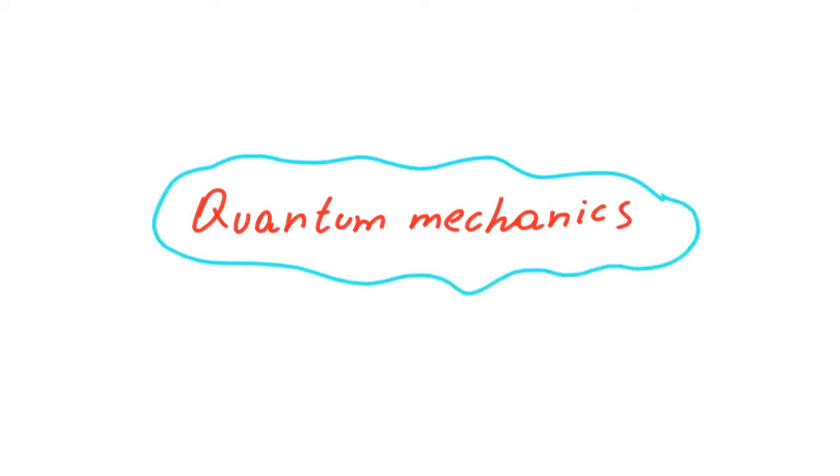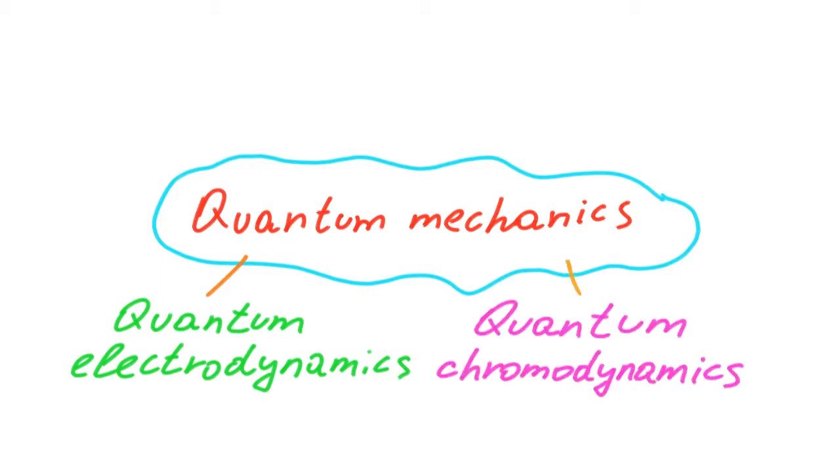Some examples are quantum electrodynamics which describes electromagnetic interactions of charged particles and photons. Quantum chromodynamics which studies the interaction between quarks and gluons, the building blocks of protons, neutrons and a lot of other particles. Promising theories like string theory are also based on quantum mechanics.